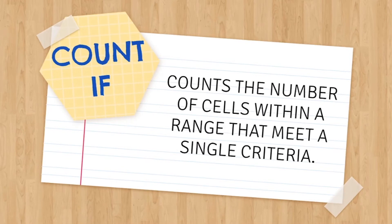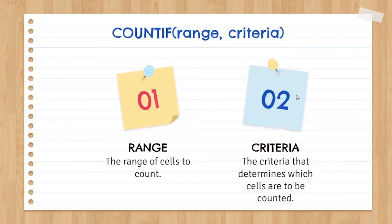Next is the COUNTIF function, which counts only the cells within a range that meet a specified criteria. The formula is: =COUNTIF(range, criteria) — where range refers to the cells to be counted, and criteria refers to the condition that determines which cells are counted.